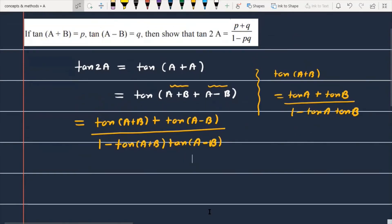So now this will become, you see, it is provided that tan of A plus B, tan of A plus B, this is equal to P. This is equal to P and tan of A minus B, this is equal to Q.